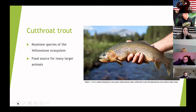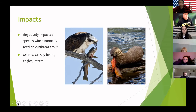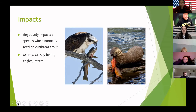The cutthroat trout is considered a keystone species of the Yellowstone ecosystem, serving as a food source for many larger animals. The declining population of the cutthroat as a result of lake trout means high-level predators lose a food source, throwing off the whole ecosystem. There's been a decline in breeding pairs of ospreys in the park, and grizzly bears and otters have also lost that food source.